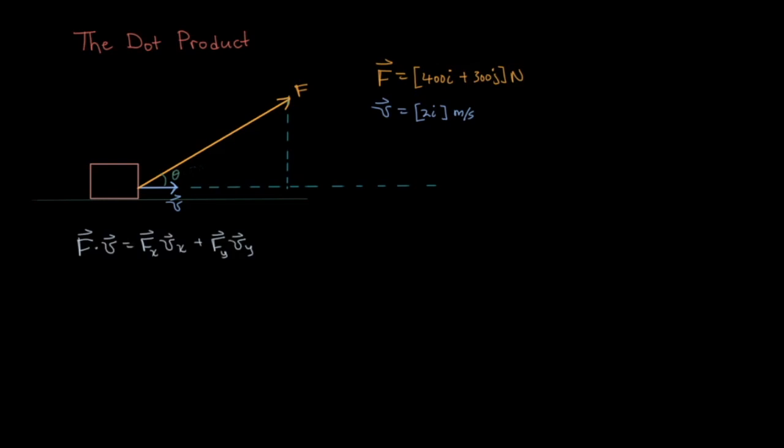F dot v is equal to fx times vx plus fy times vy. And when we put our numbers in, we get 400 times 2 plus 300 times 0, which would give us 800 watts.